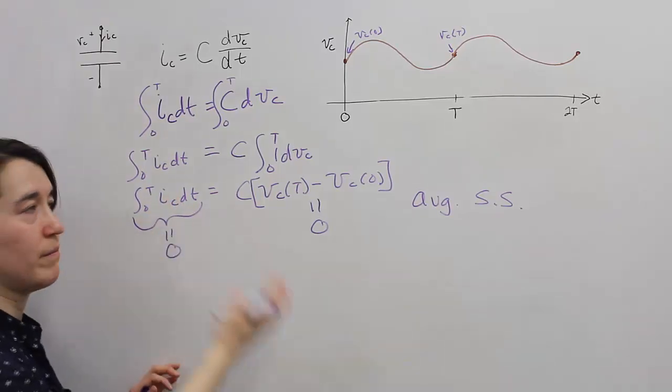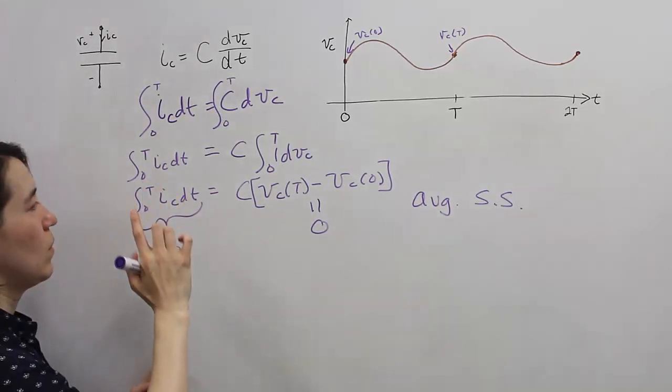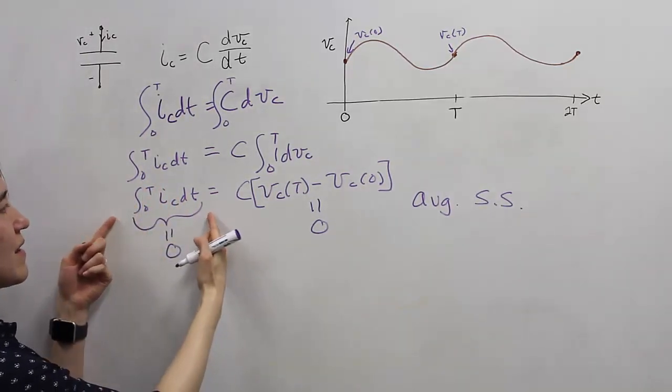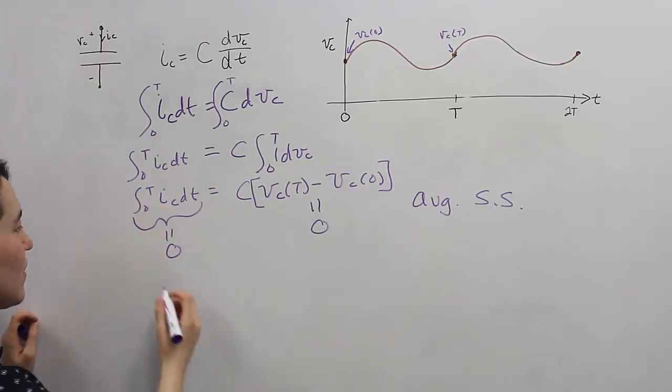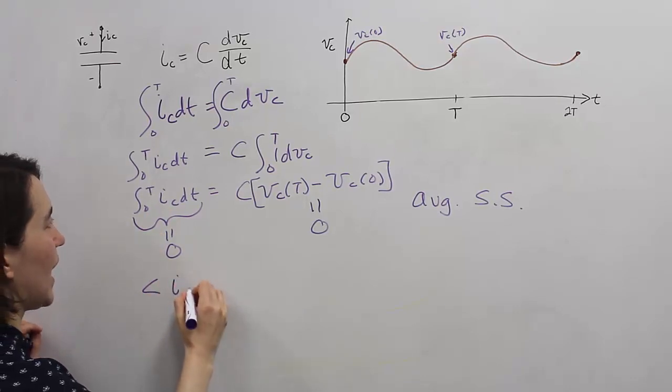This is called the charge balance part. We can then take this, and we notice that this relates to the average value of the current. So, the average value, i_c, is defined as 1 over T, the integral from 0 to T of the current.